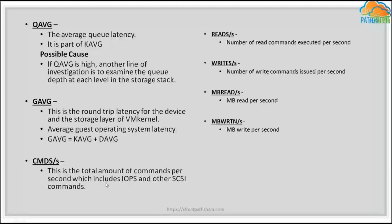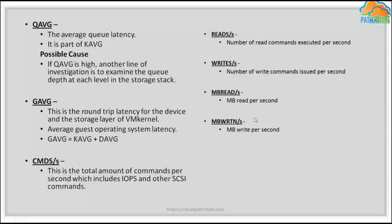Commands per second is the total amount of commands per second, including IOPS and other SCSI commands. The VM kernel sends many SCSI commands, and you can see them in vmkernel.log. Reads per second is the number of read commands executed per second; writes per second is the number of write commands issued per second; MB reads per second shows the volume of data being read; and MB writes per second shows the size of write commands processed per second.